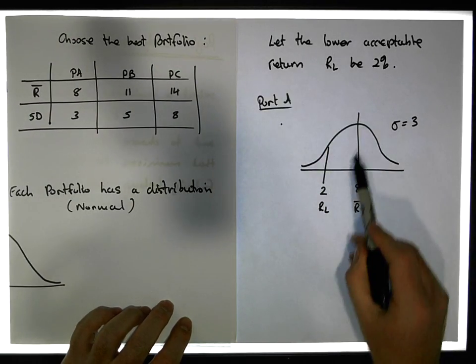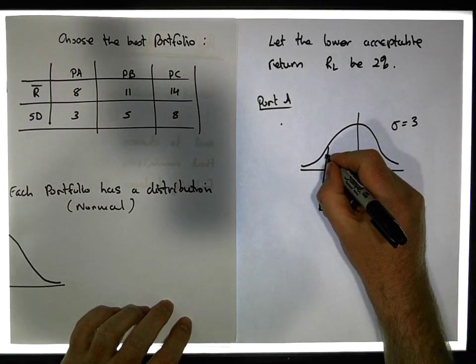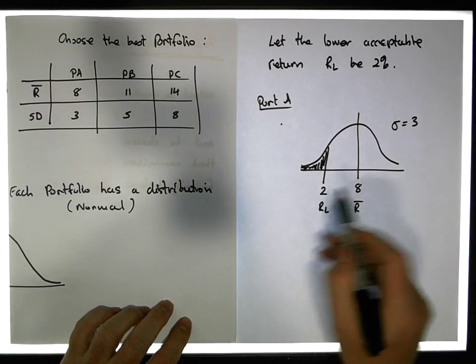The question we have now is with respect to portfolio A that has a mean value and standard deviation, what's the area to the left-hand side of 2? To figure this out, we need to standardize.